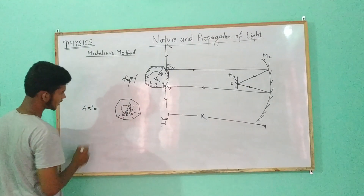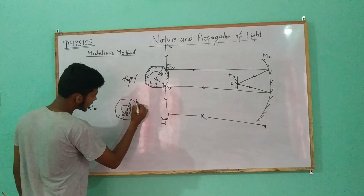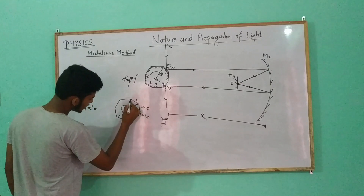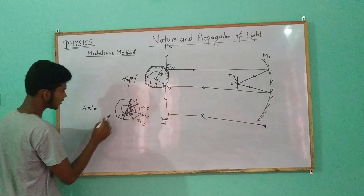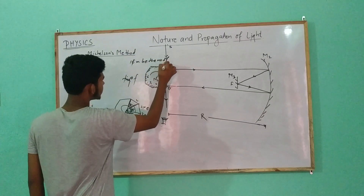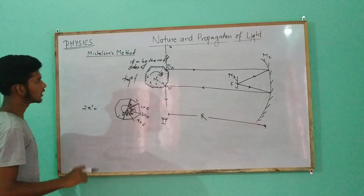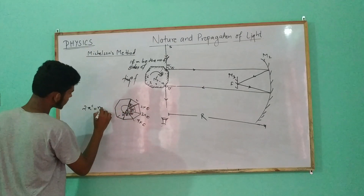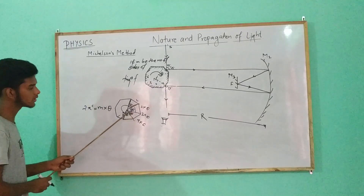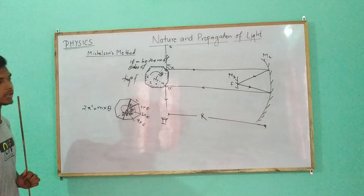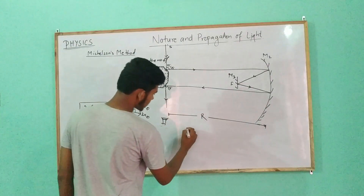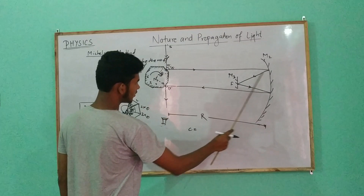The total angle is 2 pi radian. Each side subtends 1 theta, 2 theta, 3 theta, 4 theta and so on. The whole angle equals the number of sides of the rotating octagonal mirror times theta. So theta equals 2 pi divided by n, where n is the total number of sides.